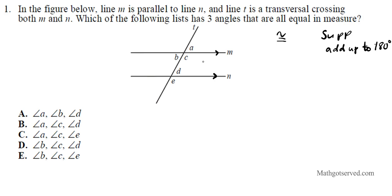So let's list each pair of angles by name and also by their measure. Let's take a look at angle A and B. Angle A is congruent to angle B — this angle is congruent to this angle. What's the reason? They are vertical angles.